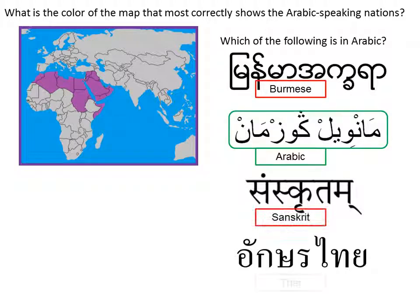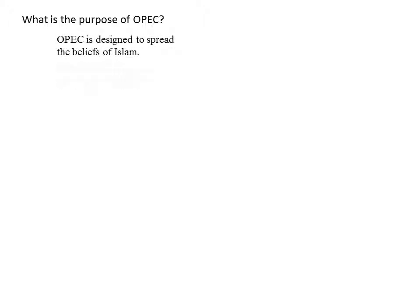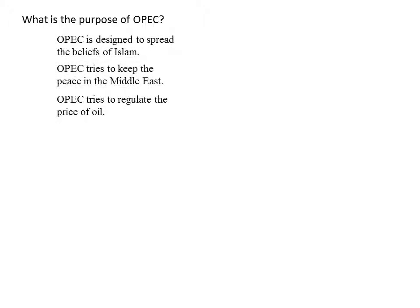Just for your information, the top scripts shown are Burmese, Sanskrit, and Thai. What is the majority religion of this area? What is the purpose of OPEC? Is it designed to spread the beliefs of Islam? Is it trying to keep peace in the Middle East? Or is it trying to regulate the price of oil?